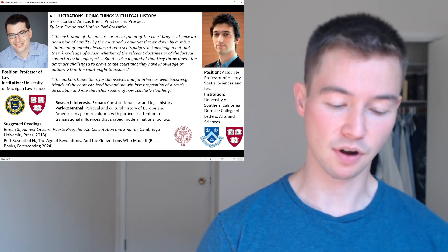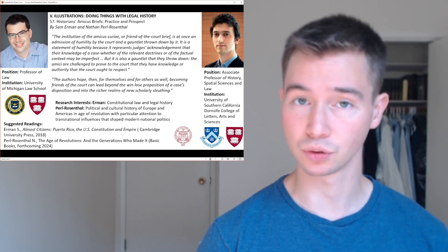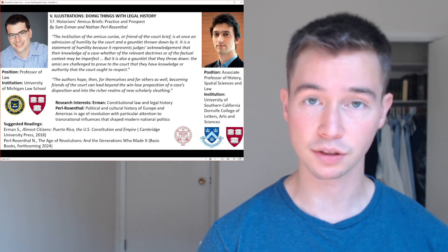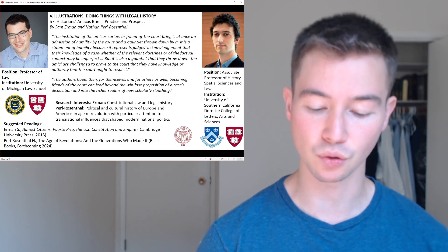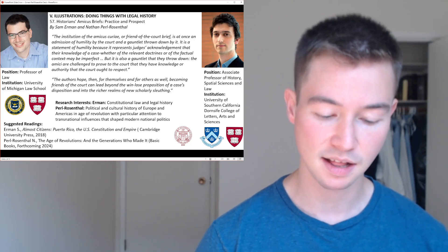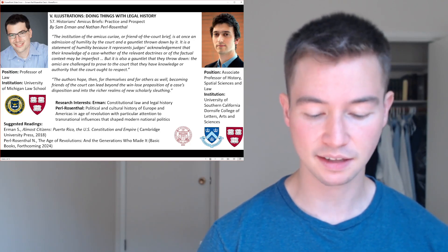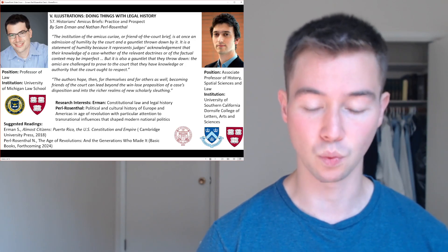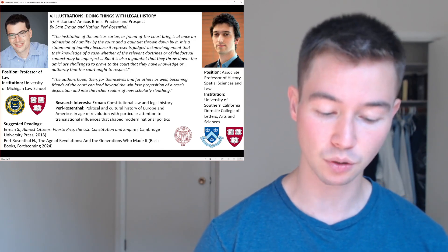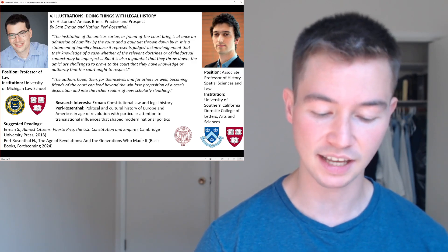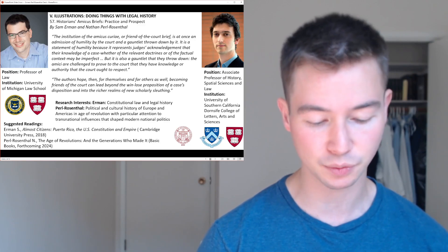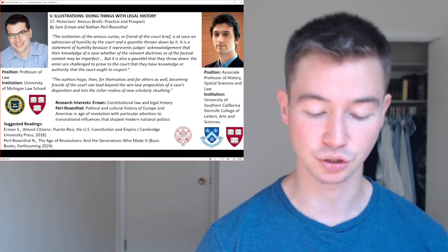For Nathan Pearl Rosenthal, he is the Associate Professor of History, Spatial Sciences, and Law at the University of Southern California, Dornside College of Letters, Arts, and Sciences. He's a historian of the 18th and 19th century Atlantic world, and he focuses on political and cultural history of Europe and the Americas in the age of revolution, with particular attention to transnational influences that shaped modern national politics.